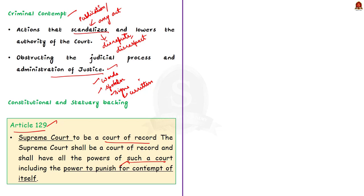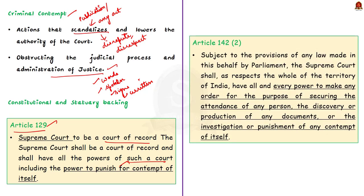Next is Article 142, Clause 2. It states that the Supreme Court has every power to make any order for the purpose of securing the attendance of any person, the discovery or production of any documents, or the investigation or punishment of any contempt of itself. Article 142 Clause 2 essentially enforces the Supreme Court's verdicts and rulings, and also states that while performing its duty the Supreme Court may issue any verdict or order necessary to provide complete justice.